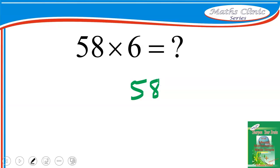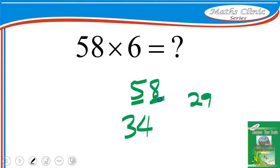With 58, mentally halve it to get 29. Now add the first digit — 29 plus 5 gives 34. Then repeat the last digit, 8. So 58 times 6 gives 348. Very simple — it's like magic!